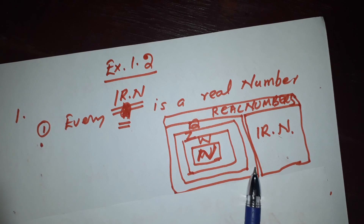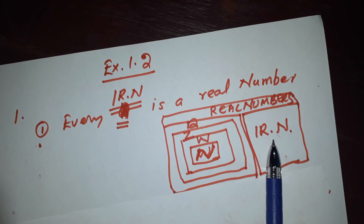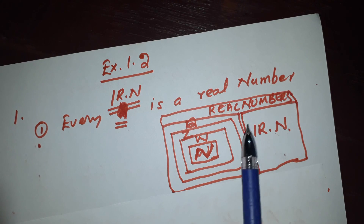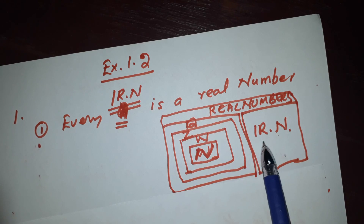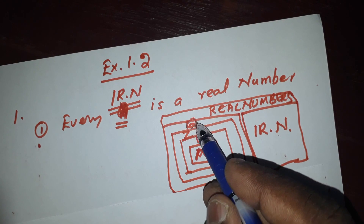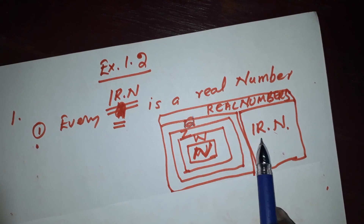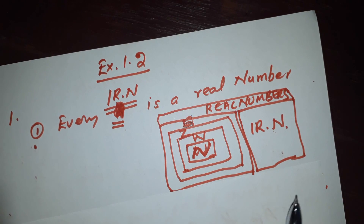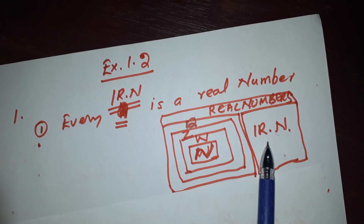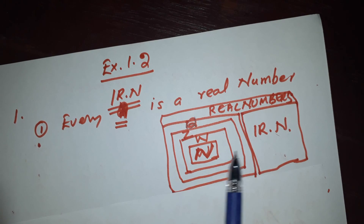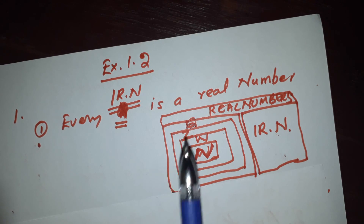We call them real numbers. It is an irrational number; we call it real numbers. Yes, it is a real number. It is an irrational number. Rational number and irrational number — real number. This statement is correct.